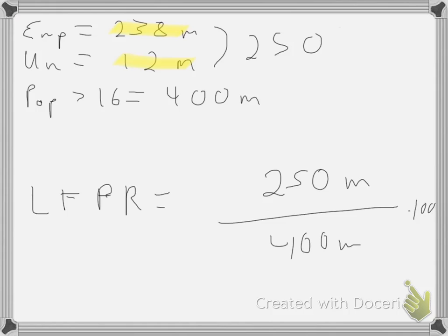And that equates to, essentially, if we did that out, 0.625, and we times that by 100, equals 62.5%.